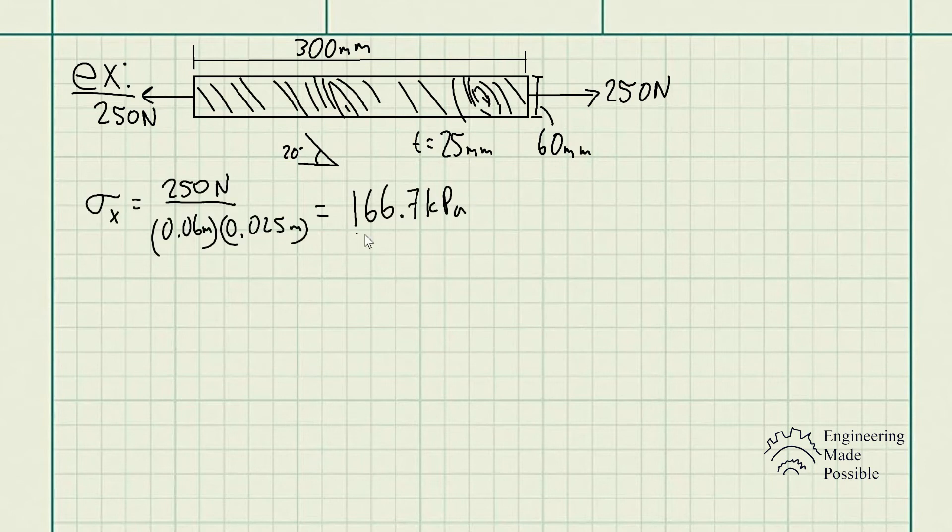If we compute the normal stress of this rod, it would be 166.7 kilopascals. You could originally use this to design the dimensions of the wood or determine if it will fail. However, since this is wood with grains at an angle of 20 degrees, wood usually tends to fail along the grains.